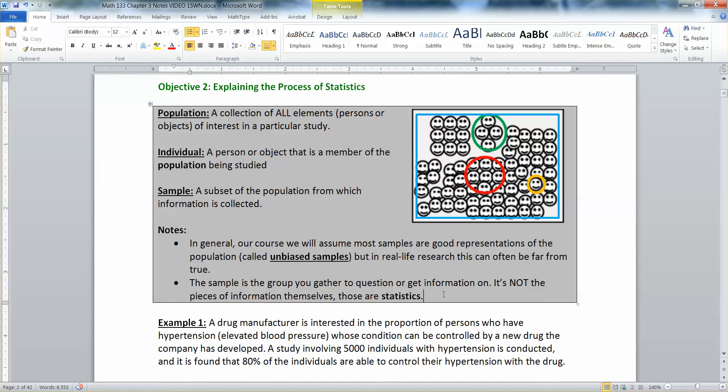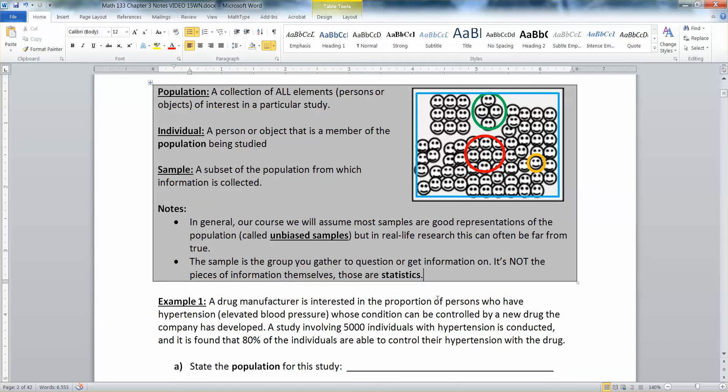So when you look at the sample, don't think of it as the average home runs. No, that's not a sample. The sample is the group. The statistics are the numbers you get from that group. So just to be clear, that's a common confusion for people.